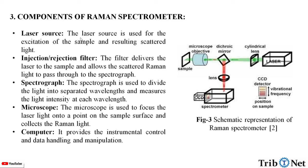The main components of the Raman spectrometer are: the laser source, which is used for the excitation of the sample; the injection or rejection filter, which delivers the laser to the sample and allows the scattered Raman light to pass through; the spectrograph, which divides the light into separated wavelengths and measures the light intensity at each wavelength; the microscope, which focuses the laser light onto a point on the sample surface and collects the Raman light; and the computer, which provides instrumental control and data handling and manipulation.